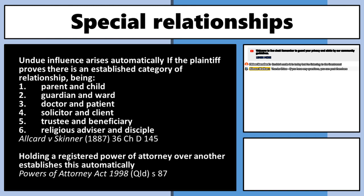The special relationships category comes in two flavors. The first is where there is one of these specific categories — and this is an exhaustive list. One of those is solicitor and client. If you are in one of those special categories of relationship, by default the other party can go to equity and ask for the contract to be rescinded. Undue influence will automatically arise if you're in one of these categories, and by default they win.